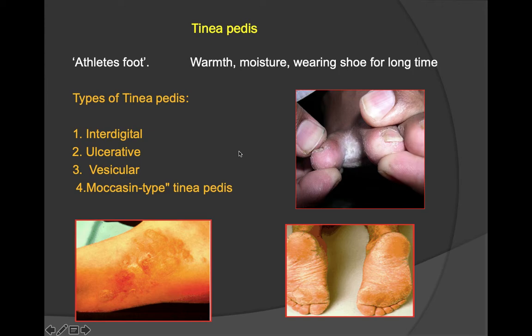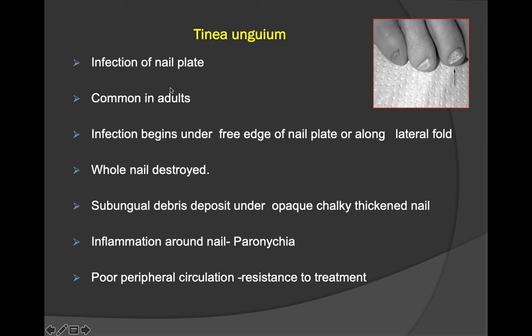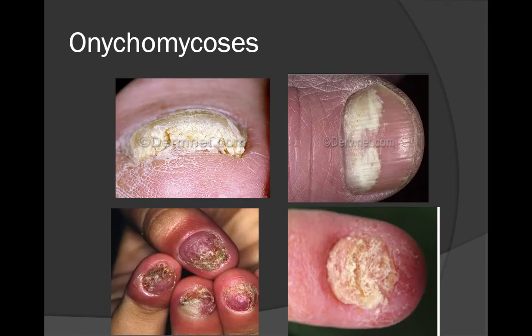In tinea unguium, the nail plate is involved and it is common in adults. Infection begins under the free edge of the nail plate or along the lateral fold. The whole nail can be destroyed, with subungual debris deposited under the nail and an opaque, chalky, thickened nail. There is inflammation around the nail called paronychia, and poor peripheral circulation can lead to resistance to treatment.